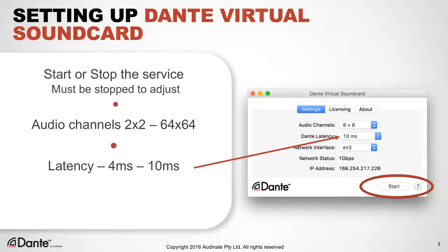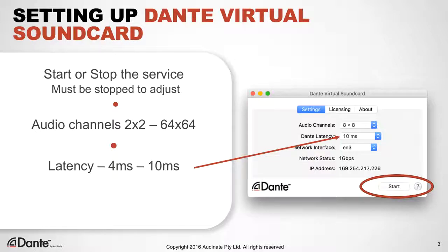Dante Latency allows you to set the receiving latency that an application would see relative to the Dante transmitter. This value depends upon computer performance, with 4ms for very good machines and 10ms for those with lower effective performance. Here's a recommendation: always start at the default value.